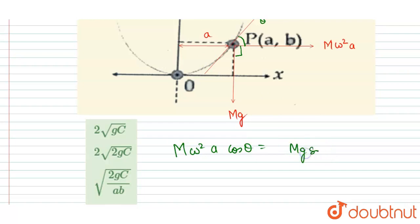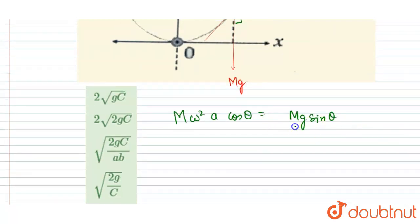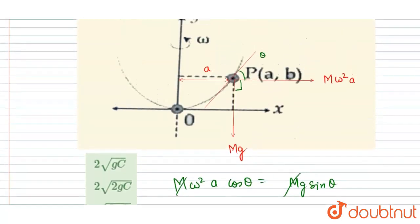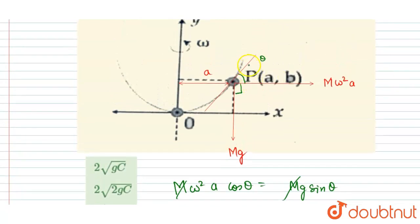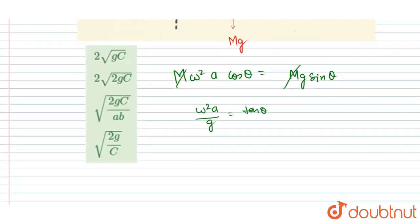Cancelling m from both sides, we get omega²·a / g = tan(theta). Now, tan(theta) is the slope of the curve at that point, which equals dy/dx. So we replace tan(theta) with dy/dx, giving omega²·a / g = dy/dx.